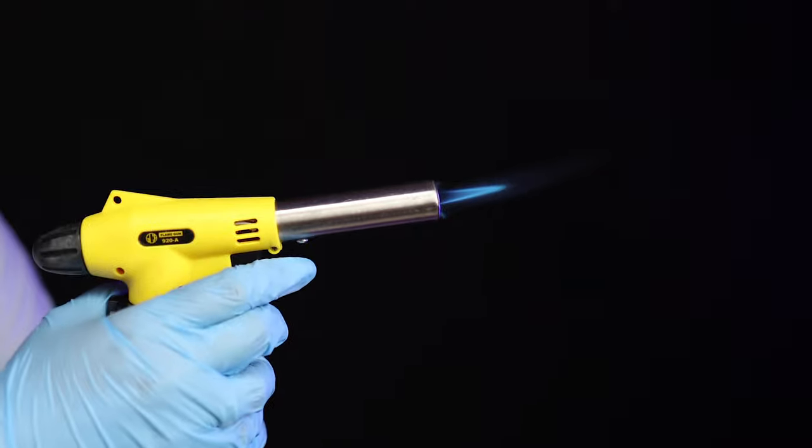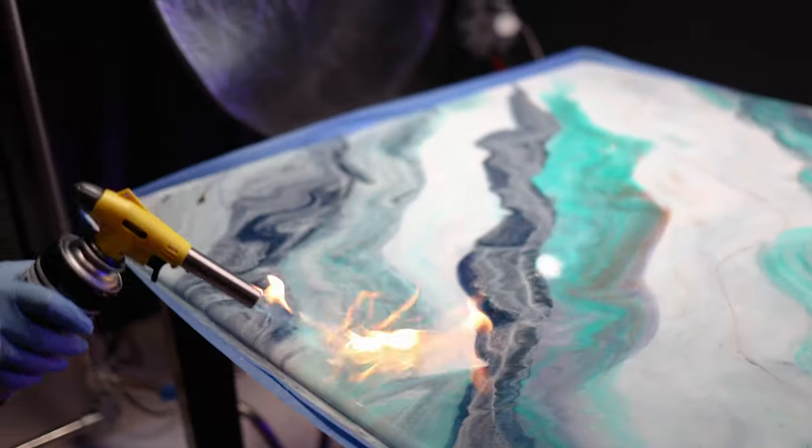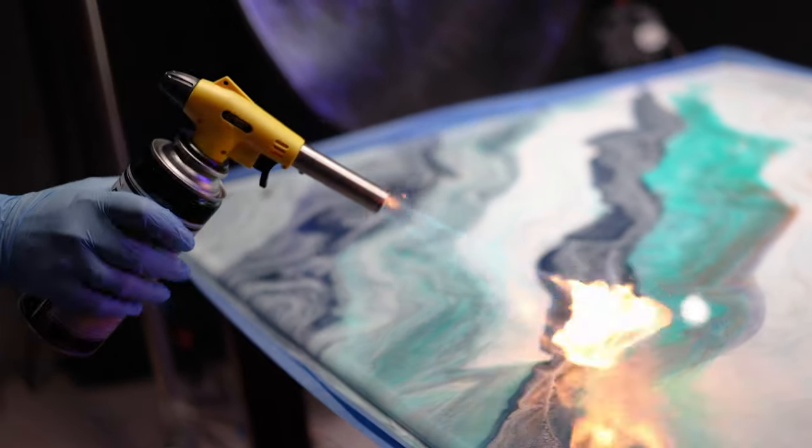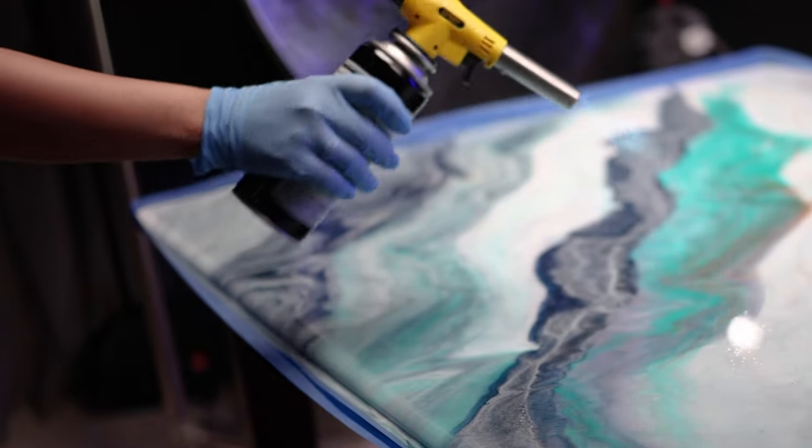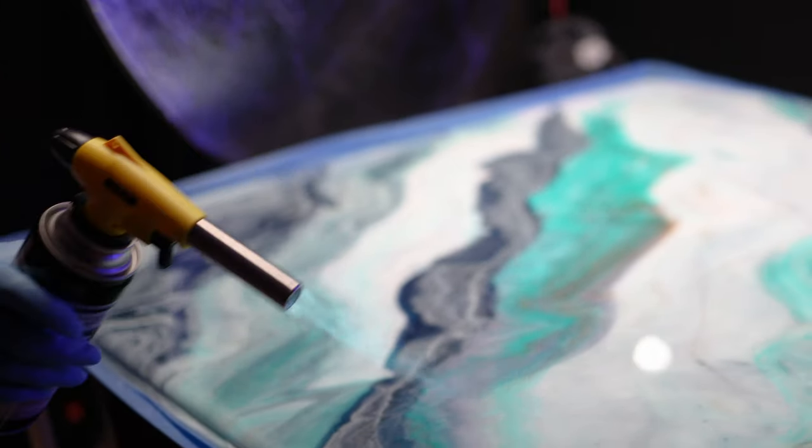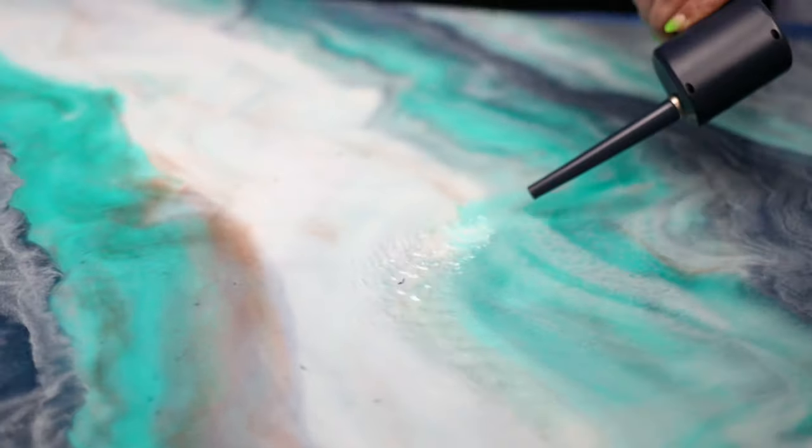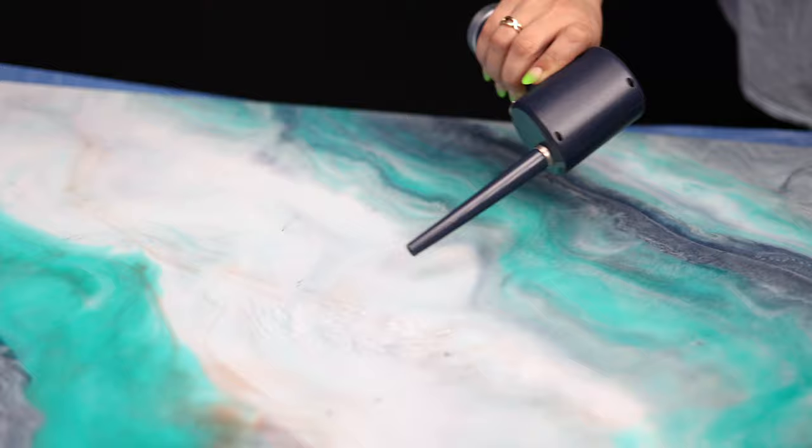Time for a quick torch to make sure you pop all the bubbles. I also like to use this air blower just to again soften some of those wanes and lines. I will link all of the supplies in the description below.